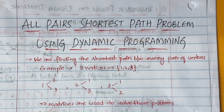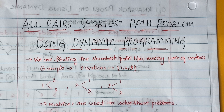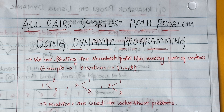Hello everyone, welcome back to my YouTube channel. In today's video we are going to learn about the All Pairs Shortest Path problem using the concept of dynamic programming in the subject of Design and Analysis of Algorithms. Till now we have seen different algorithms in dynamic programming, like Optimal Binary Search Tree and 0/1 Knapsack problem, and All Pairs Shortest Path is also one such algorithm.